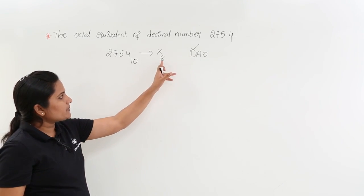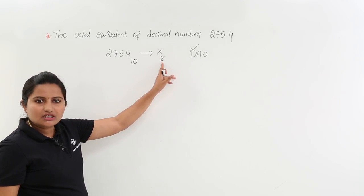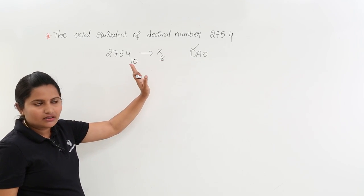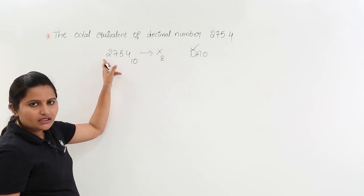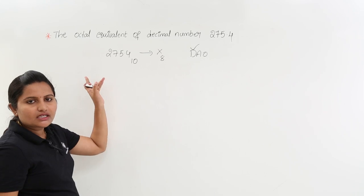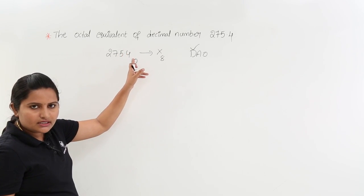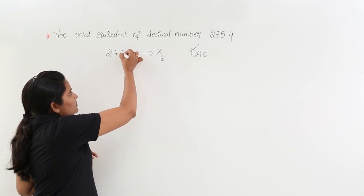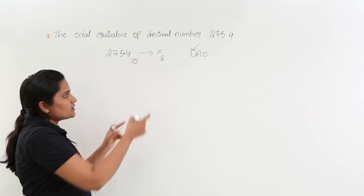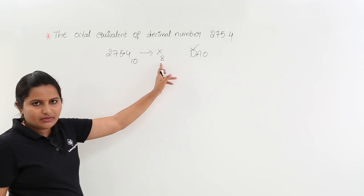For division, consider the destination number system — whatever number is given, you need to perform division with respect to it. If you have digits after the decimal point, for those digits you need to take multiplication with respect to the destination number system.